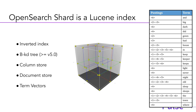A Lucene index is built with several data structures. The inverted index allows you to execute text search. The BKD tree is a highly optimized data structure for numerical lookups, including numeric fields, geospatial fields, and others. The column store is what helps us do aggregations — it's an additional data structure for that. The document store keeps the original source of the document you've added, so when you search, you get back the source from the document store. There's also a vector store now in newer versions of OpenSearch.